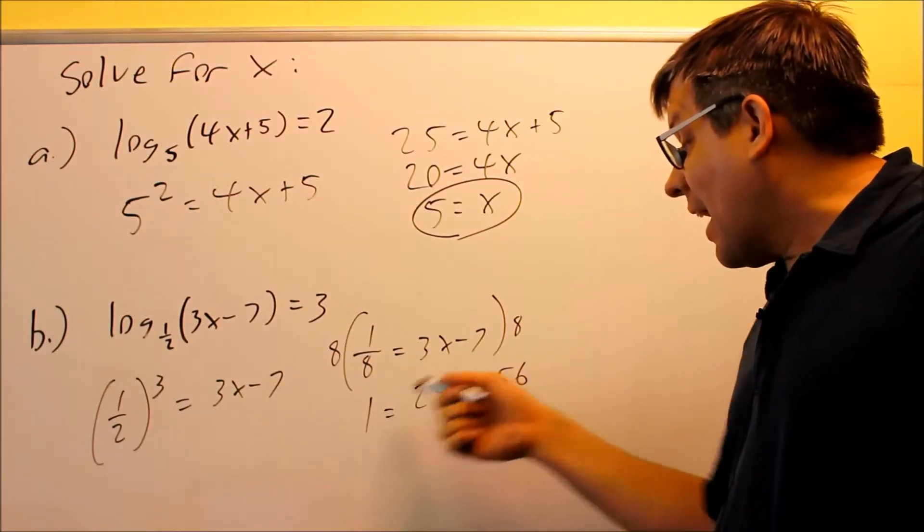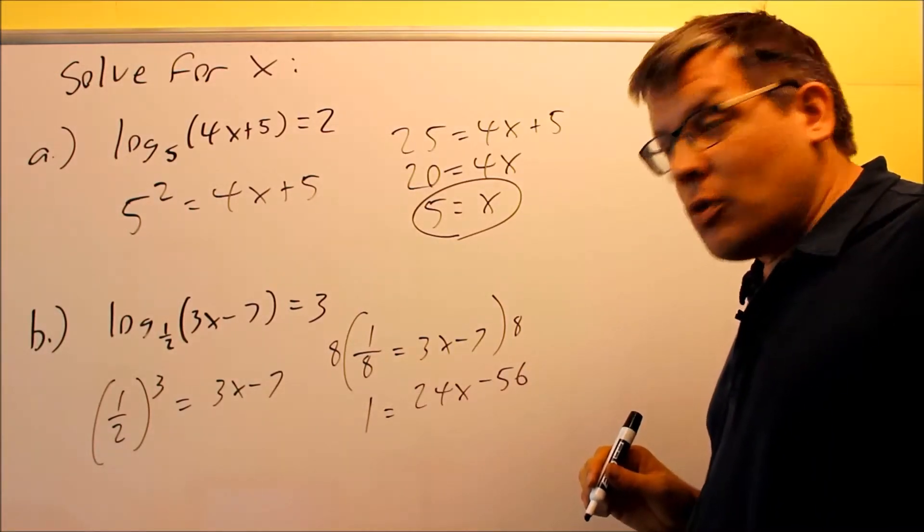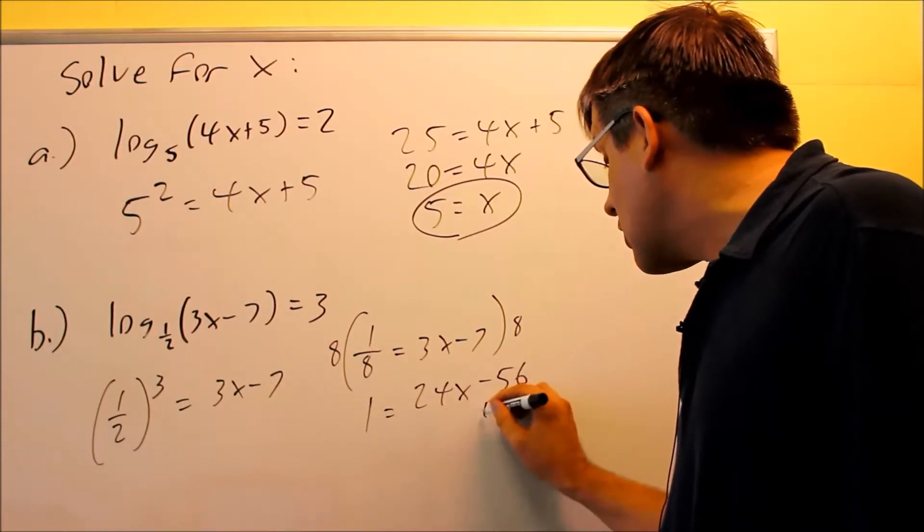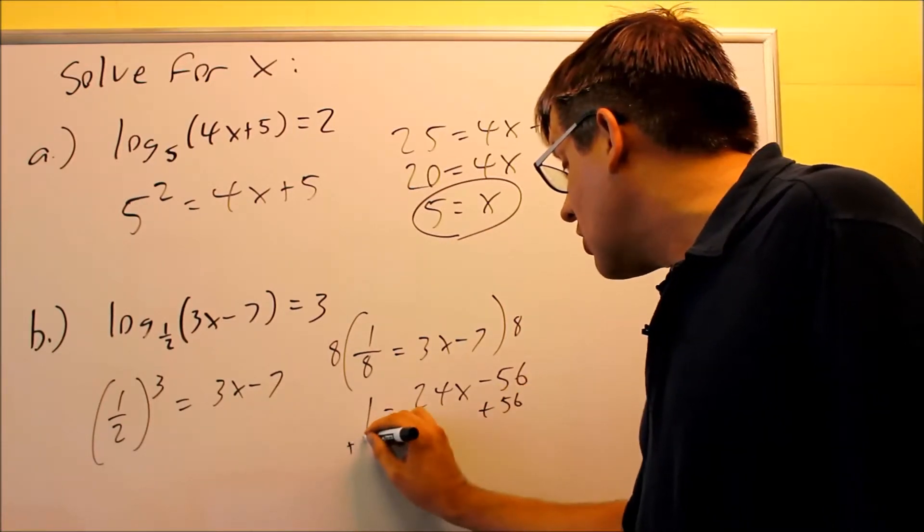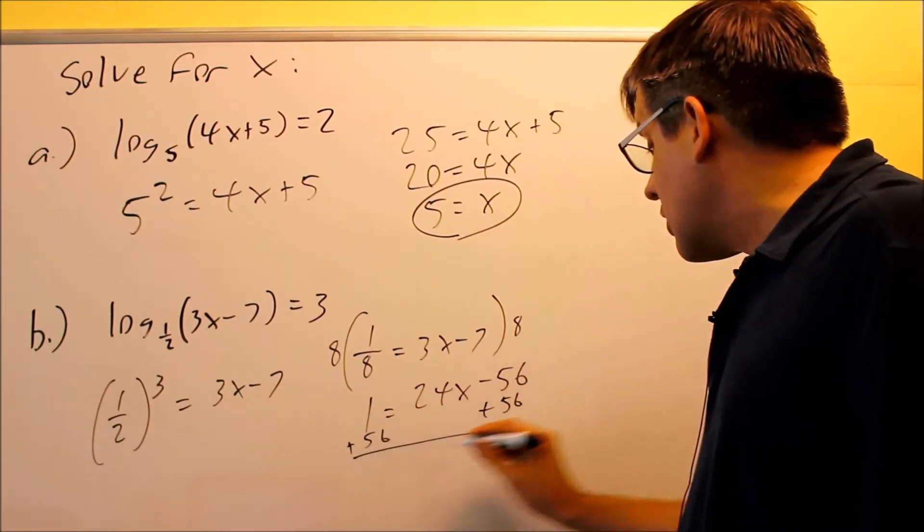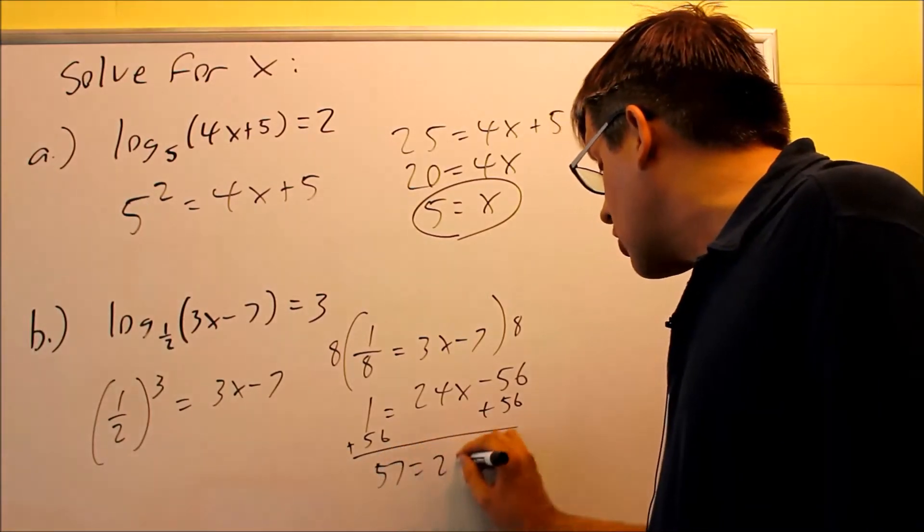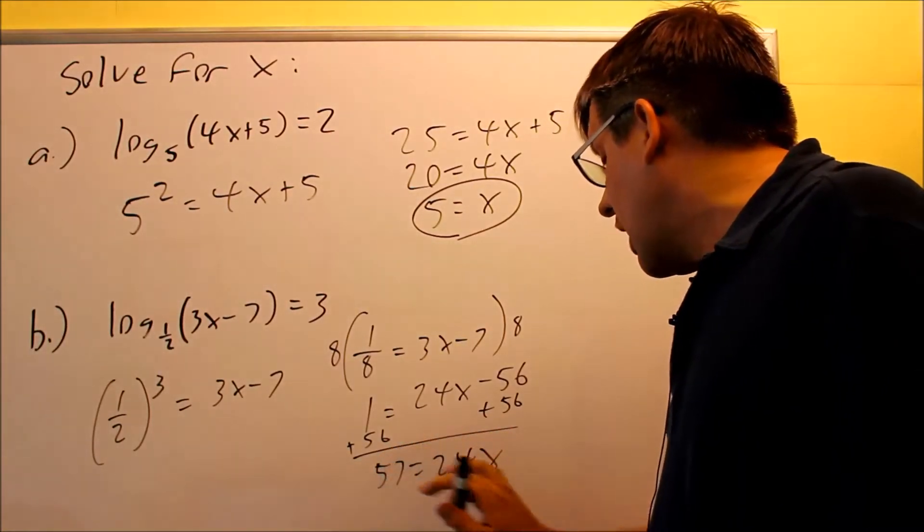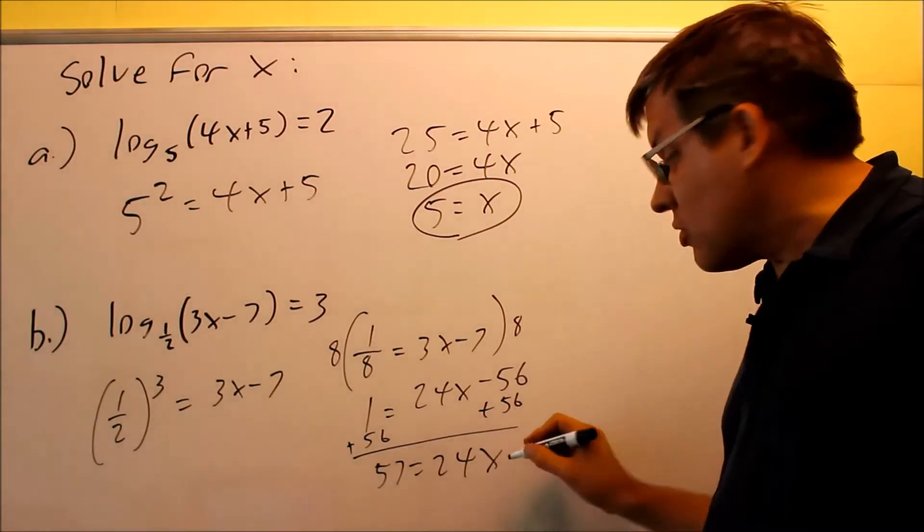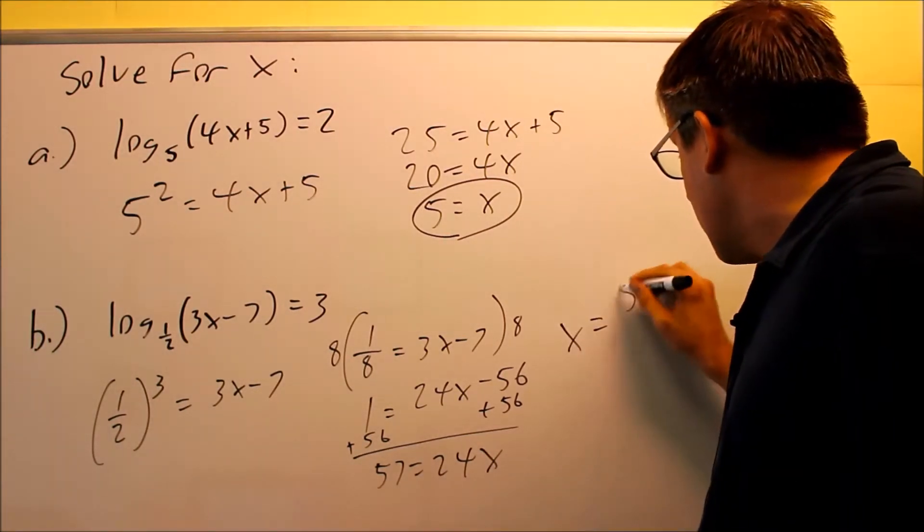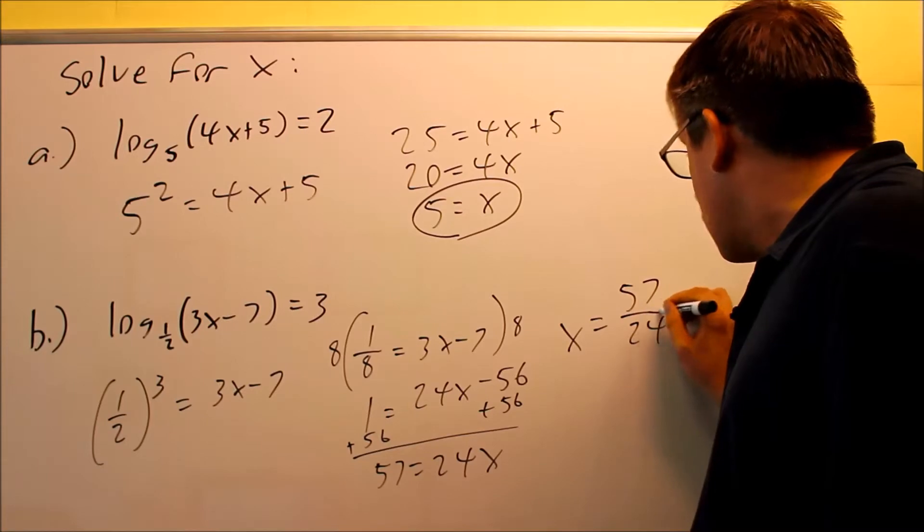Then we want to solve for x. We're going to add 56 to both sides. And if you add 56 here and add 56 there, you're going to get 57 equals 24x. So when I have 57 equals 24x, I want to divide both sides by 24. My answer is going to be 57 over 24.